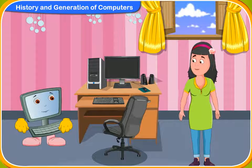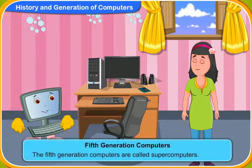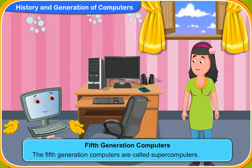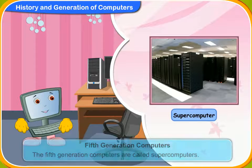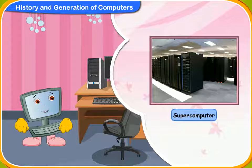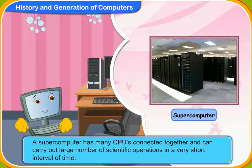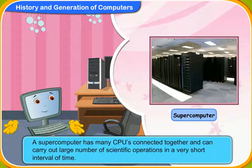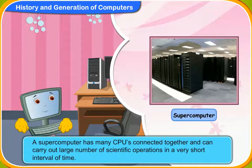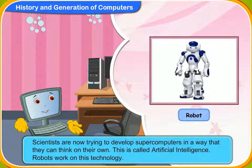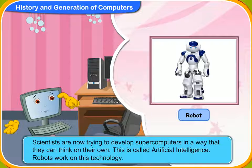Are there any further developments of computers? Yes, Rini. The fifth generation computers are currently under development. They are called supercomputers. Why are they called supercomputers? Because they have high storage capacity, speed and efficiency. A supercomputer has many CPUs connected together and can carry out a large number of scientific operations in a very short interval of time. Scientists are now trying to develop supercomputers in a way that they can think on their own. This is called artificial intelligence. Robots work on this technology.